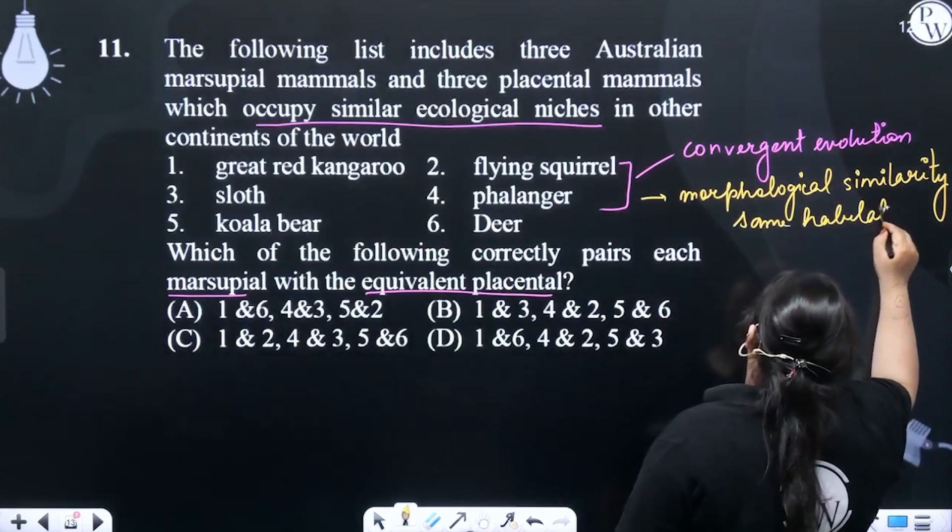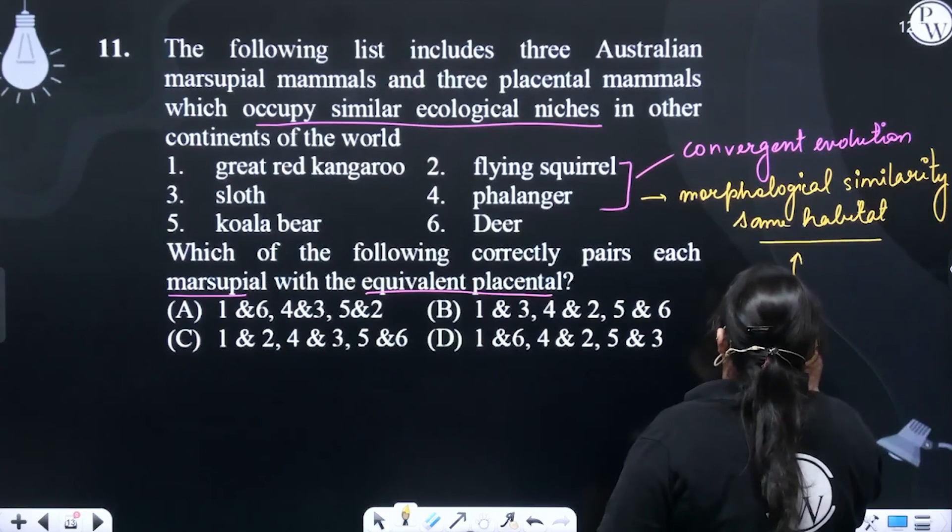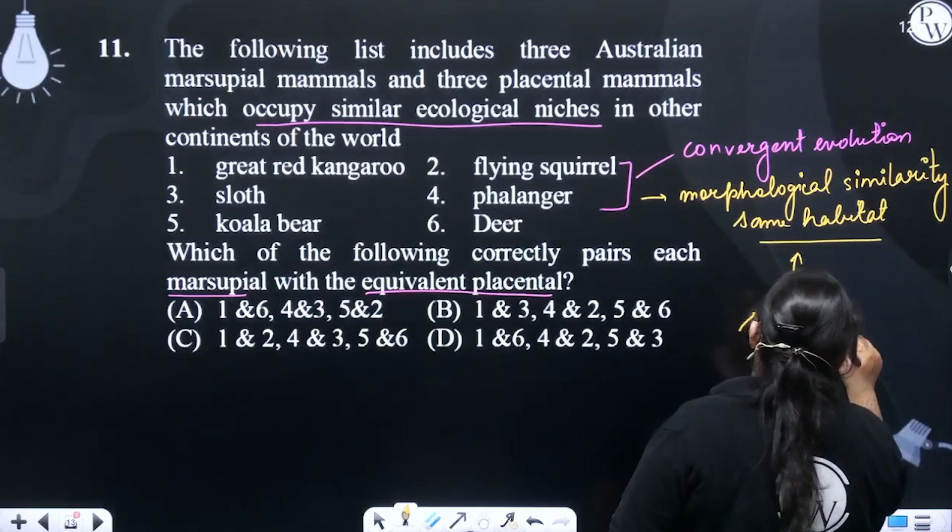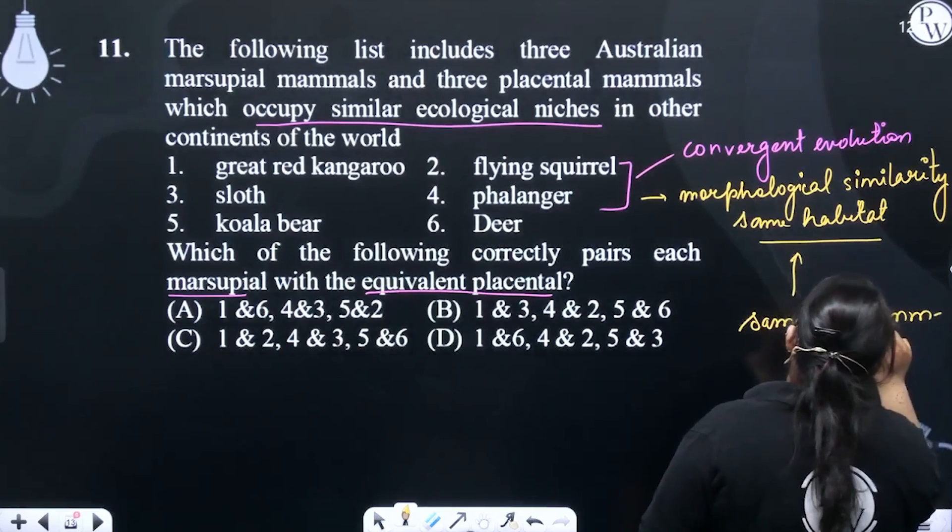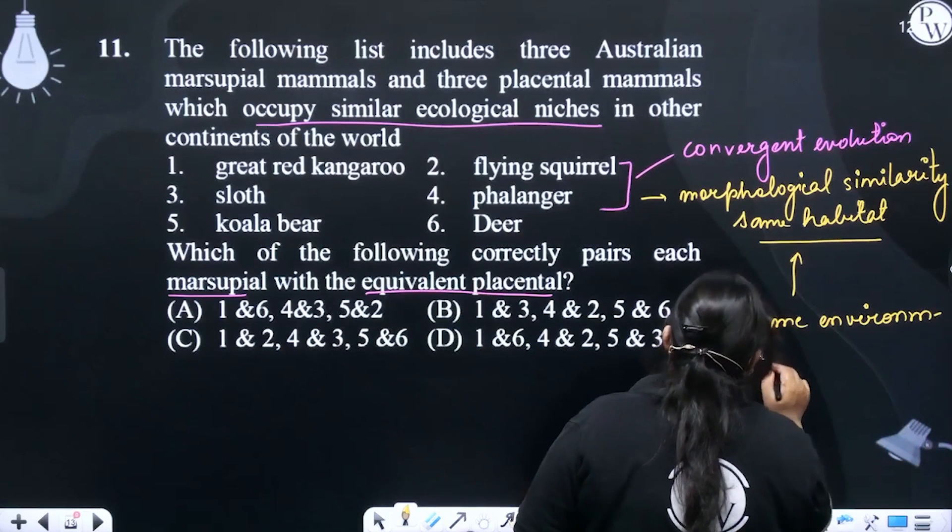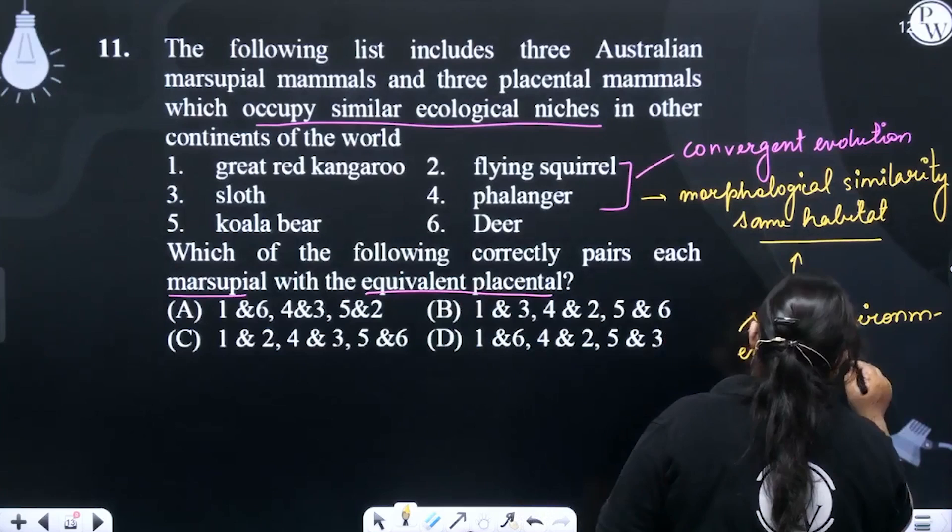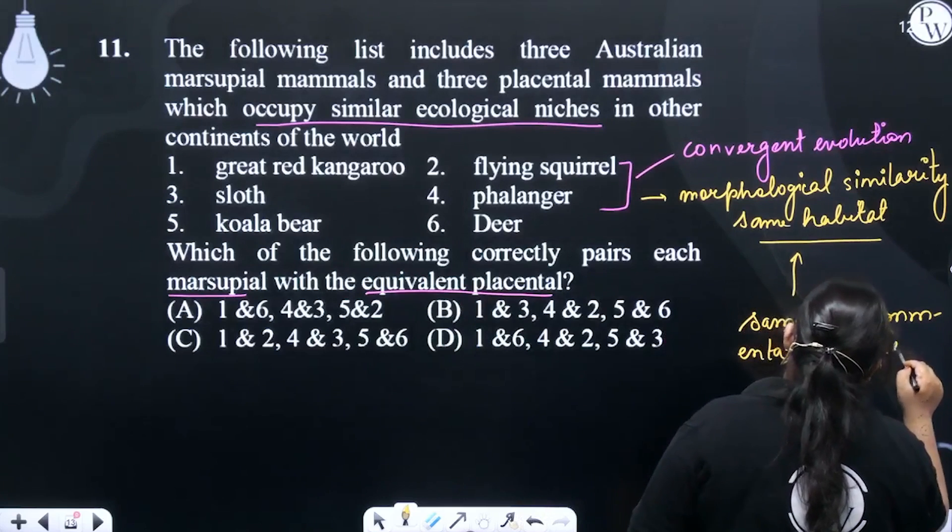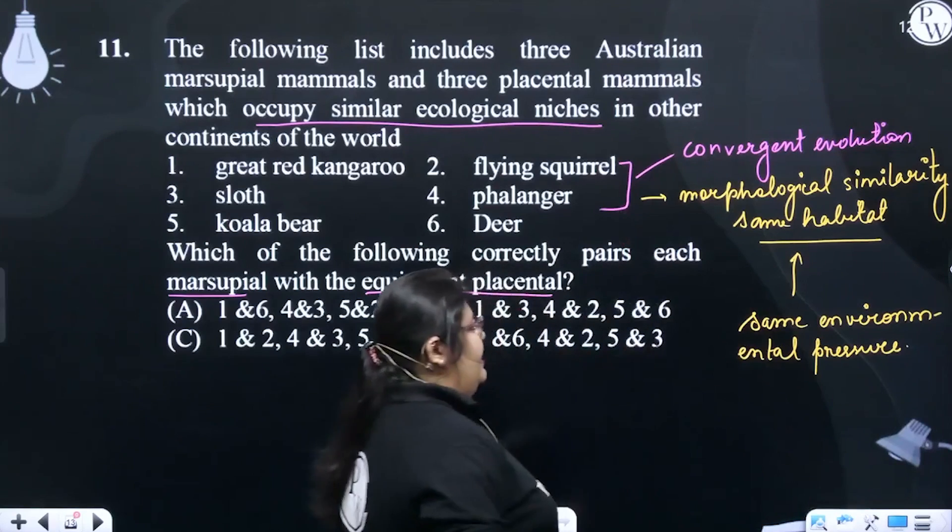Same habitat in the sense that the selection pressure is the same. They have the same environmental pressure, which is why they exhibit similarity.